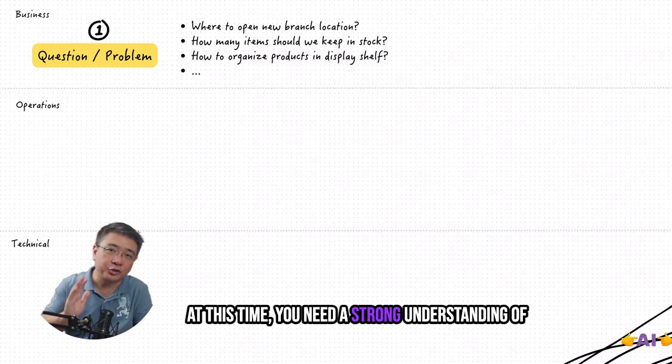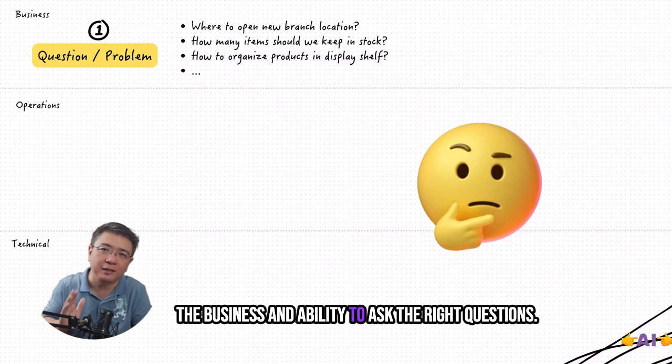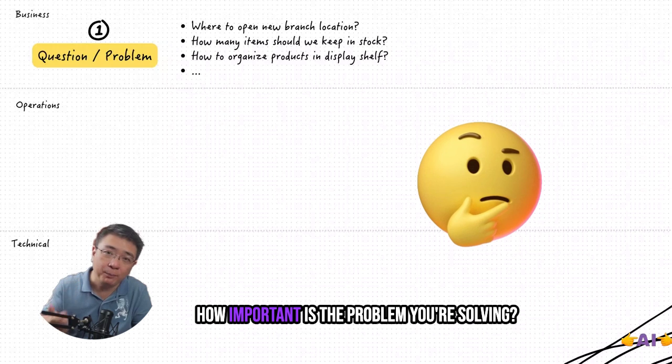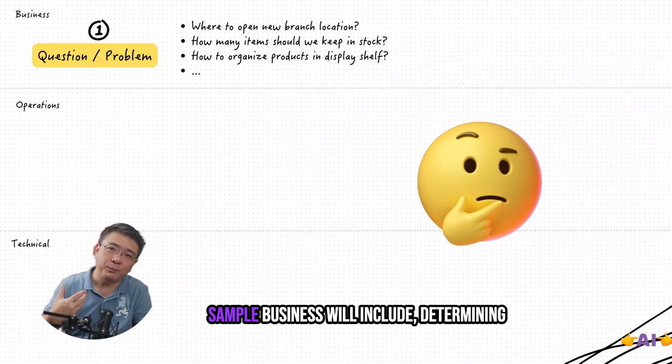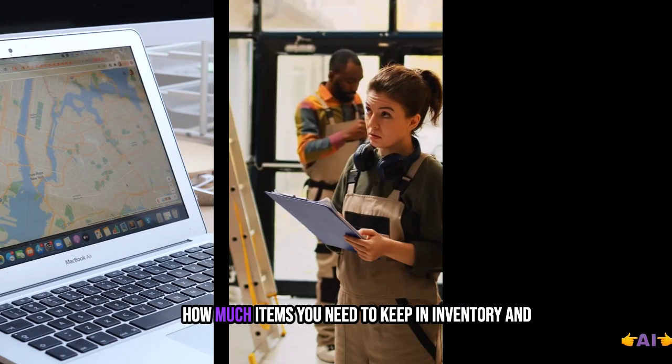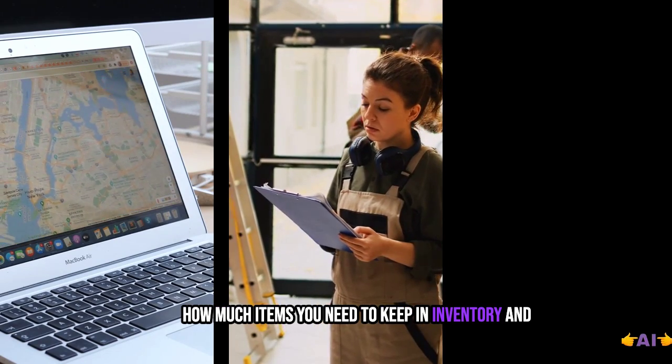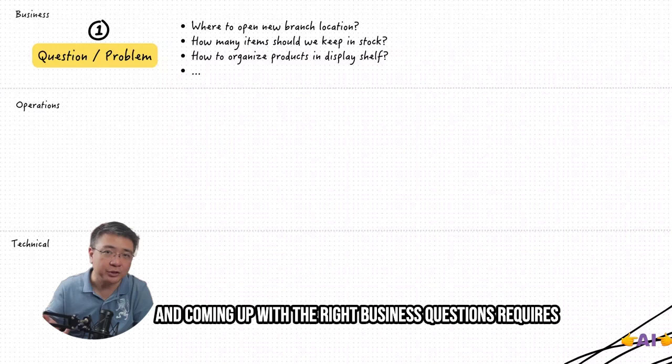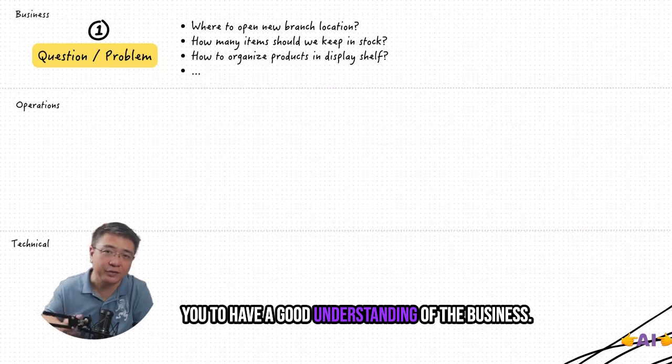At this time, you need a strong understanding of the business and ability to ask the right questions like, What problem are you trying to solve? How important is the problem you're solving? Sample business questions would include determining where to open new branch locations, how many items you need to keep in your inventory, and how to organize your products in your display shelf. Coming up with the right business questions requires you to have a good understanding of the business.